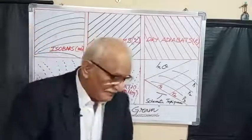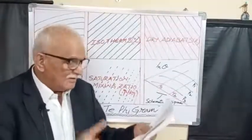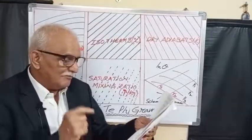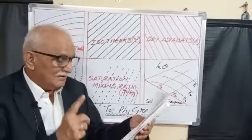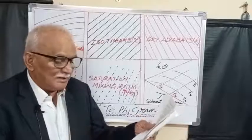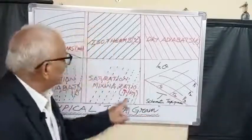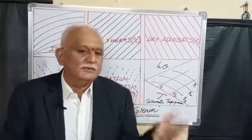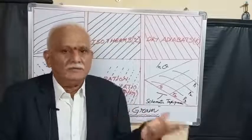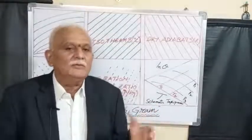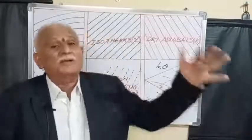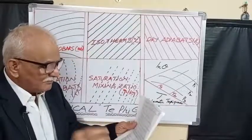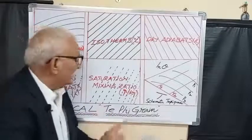Saturation mixing ratio is defined at a particular temperature and pressure in units of grams per kg. Relative humidity is defined as the ratio between the amount of water vapor present in the atmosphere to the amount required for saturation. Mixing ratio is the number of grams of water vapor required to saturate one kilogram of dry air.